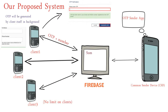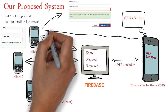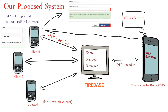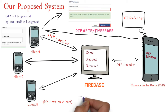After that, when Firebase realizes that some request has been received, it will send the OTP and the number to the common center device. The application on the common center device will then compose a text message and send that OTP as a text message to Client 1.